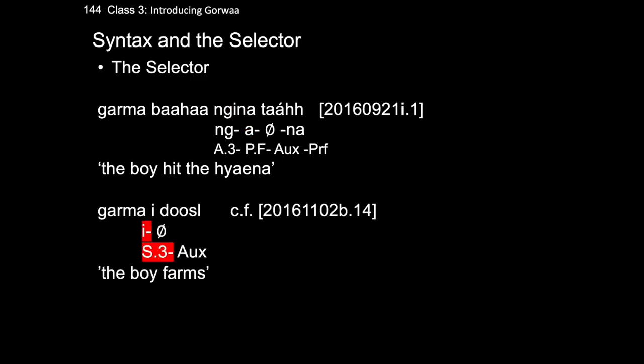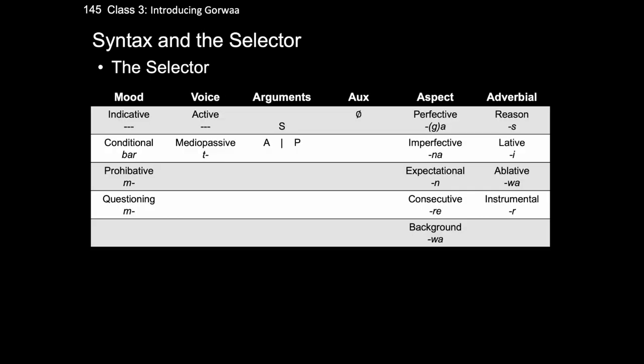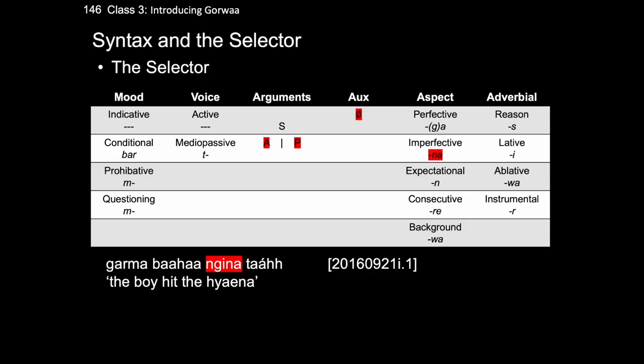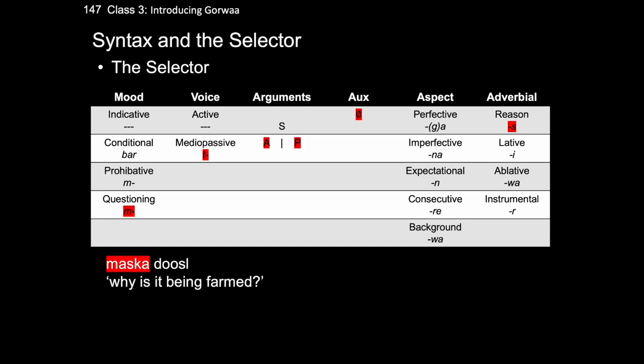All of the affixes present in the Gorwa selector are given here, with items occurring within the same column unable to occur together. With our example sentence as a model, we can see that the selector marks an agent argument, a patient argument, as well as imperfective aspect. Whereas the particularly rich selector in the phrase maskadoch, meaning 'why is it being farmed,' where the thing being farmed is feminine such as a field, is marked for questioning mood, mediopassive voice, agent and patient arguments, as well as for the adverbial for reason.